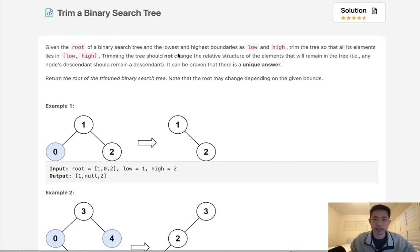Given the root of a binary search tree and the lowest and highest boundaries as low and high, trim the tree so that all its elements lie within low and high. Trimming the tree should not change the relative structure of the elements that will remain in the tree, and it can be proven that there is a unique answer. Return the root of the trimmed binary search tree.